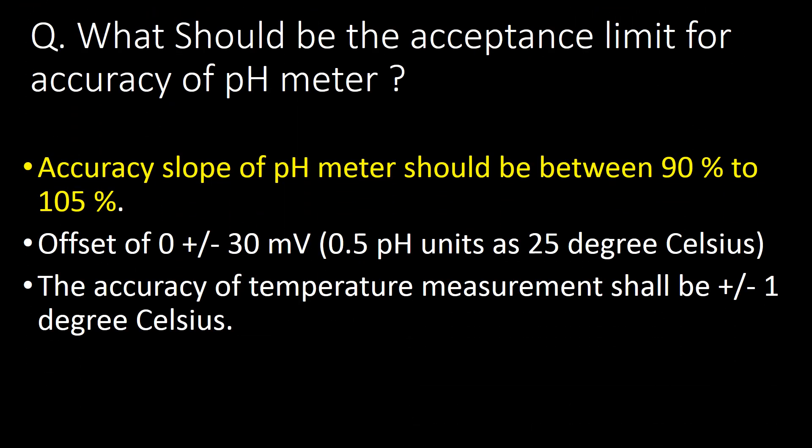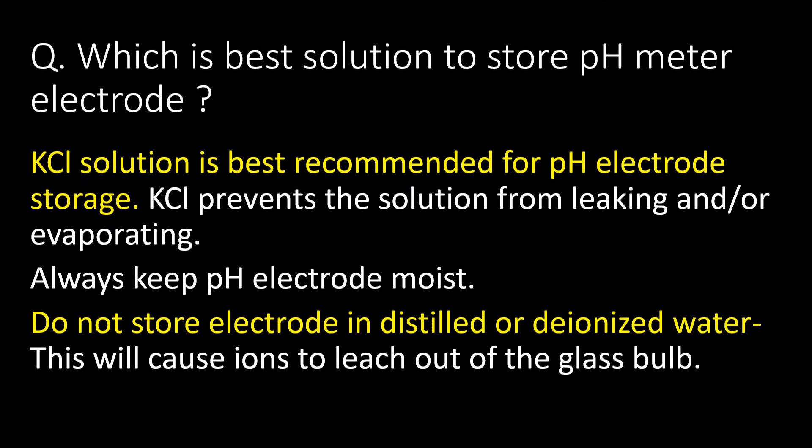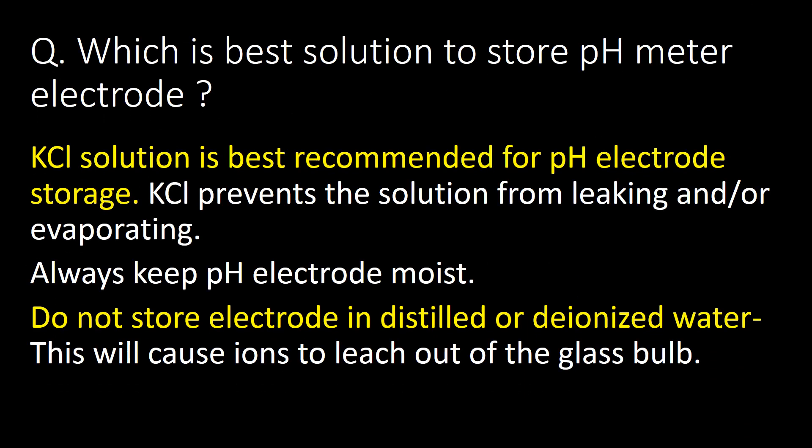What should be the acceptance limit for accuracy of a pH meter? The accuracy slope of a pH meter should be between 90% to 105%. The offset should be zero plus or minus 30 millivolts, and the accuracy of temperature measurement shall be plus or minus 1 degree Celsius.